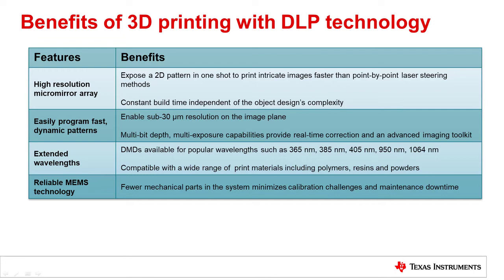Within the DLP products portfolio, there are DMDs to support wavelengths into the ultraviolet and near-infrared ranges. This allows system designers to select the best material for their application from a wide range of compatible polymers, resins, and powders. DLP products are based on reliable MEMS technology that can reduce the need for more mechanical parts in the system design, thereby eliminating calibration challenges and requiring less maintenance of the 3D printing equipment.